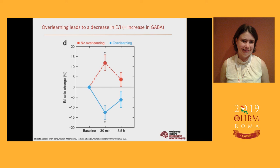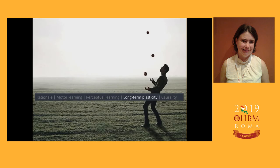So it matters what stage of learning you're looking at. Are you looking at the short-term active acquisition of behavior? Or are you looking at what happens afterwards when there's no further behavioral improvement but you go on to stabilise and consolidate that information? That was looking at short-term learning and what happens after you've learnt it — consolidation. The other situation we might be interested in is what happens to neurochemicals during longer-term learning and plasticity.